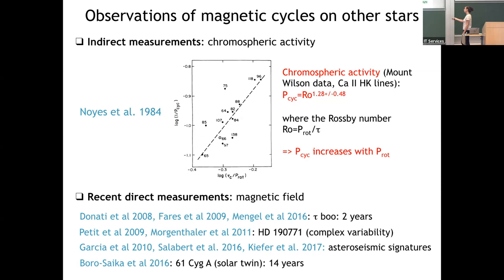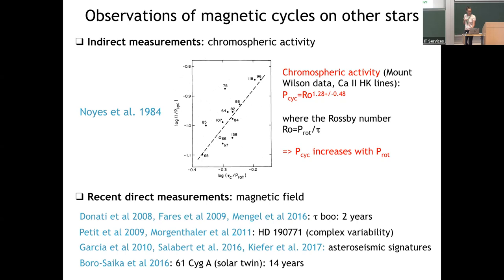We now also start to have direct measurements of magnetic field reversal thanks to spectropolarimetry, and these are still in agreement with the typical trend that faster rotation gives shorter cycle periods.